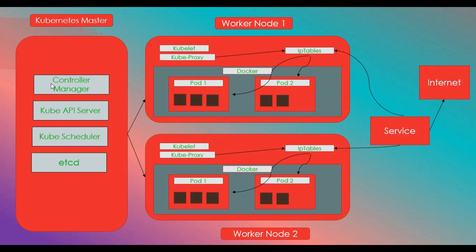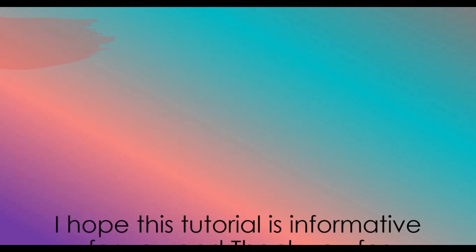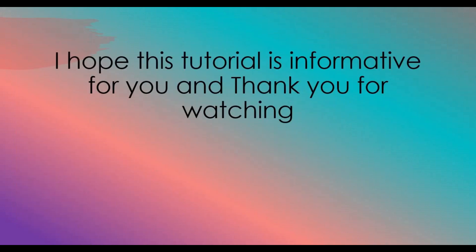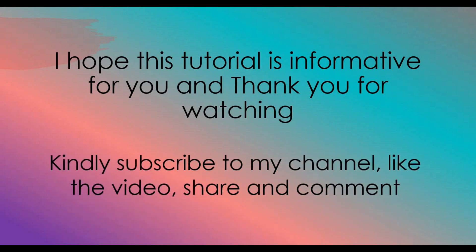To recap: the Kubernetes master has the controller manager, kube API server, scheduler, and etcd as the key store. Worker nodes have kubelet, kube proxy, and the Docker layer, with pods running inside and containers inside the pods. Pods are created using deployments; kube proxy assigns IP addresses via IP tables; and services are used to expose pods to the outside internet. I hope this tutorial was informative — thank you for watching, and please subscribe to my channel, like, share, and comment.